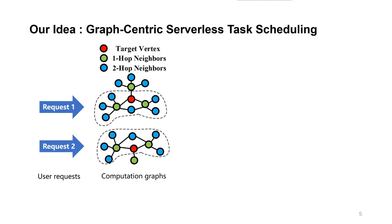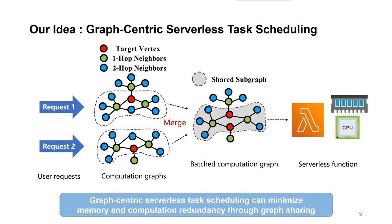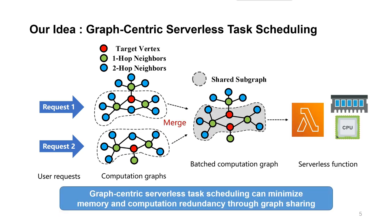Our idea is to switch from the request-centric serverless design to a graph-centric one. The memory and computation redundancy can be avoided by batching requests and sharing intermediate results.